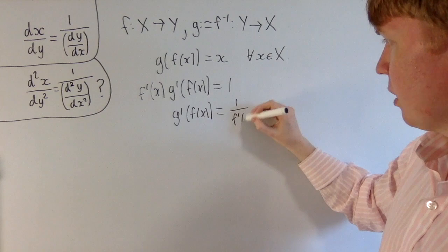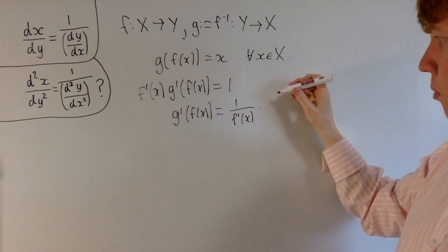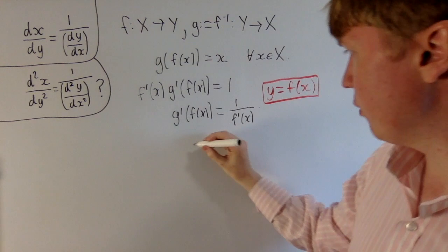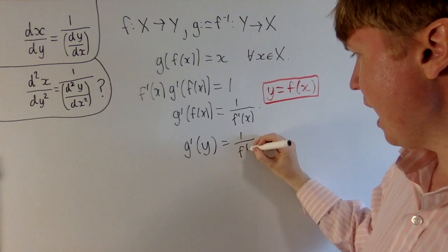This doesn't really look like what we had in Leibniz notation. But let's introduce, for our generic point x, a generic point y = f(x). Then we can replace g'(f(x)) with g'(y). This equals 1/f'(x). Hopefully this is looking slightly more familiar.